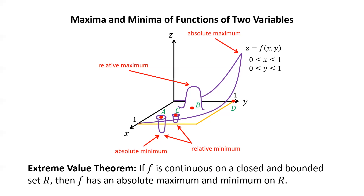Just like in single variable calculus, we have a version of the extreme value theorem for a function of two variables. If f is continuous on a closed and bounded set R, then f has an absolute maximum and minimum on R. By a closed set R, we mean a set that contains its whole boundary. By bounded, we mean that the whole set can be contained inside of a rectangle.